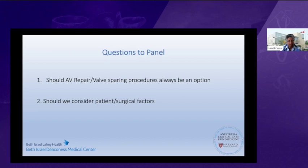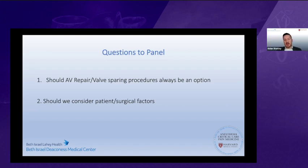Dr. Vegas noted that the patient presented with chest pain and questioned whether there was any prior imaging to suggest what the size of the aneurysm was before — how do you know it's not acutely dilating? There was no prior imaging available, so it was unclear whether this was acutely dilating or a chronic event. Going on his past history of progressive shortness of breath and chest pain, the assumption was that this was an evolving process over the previous few months.